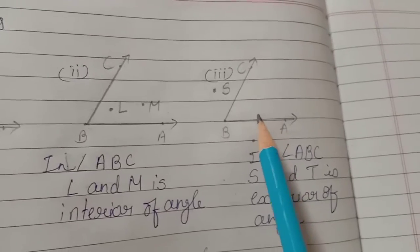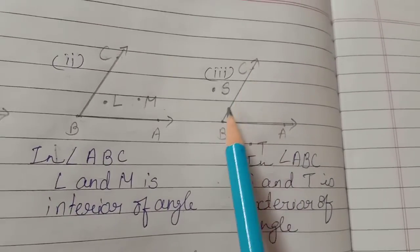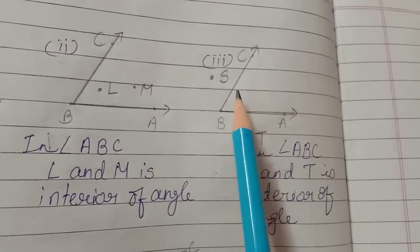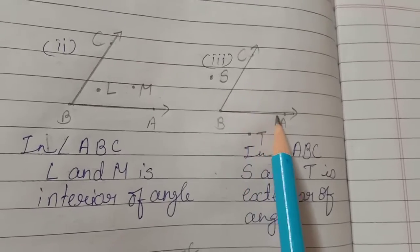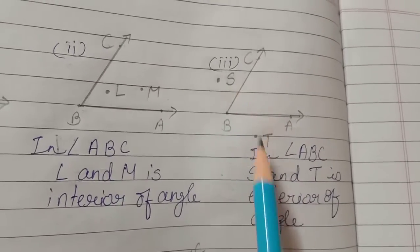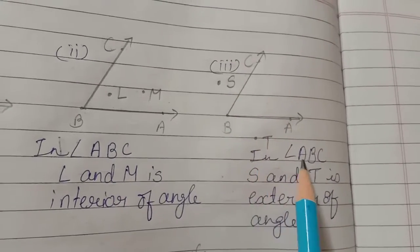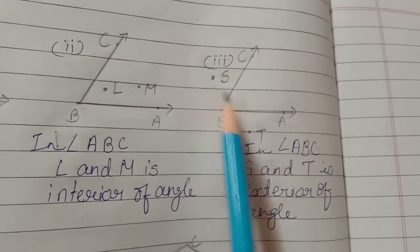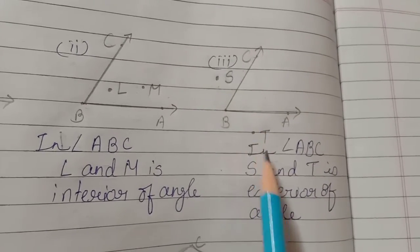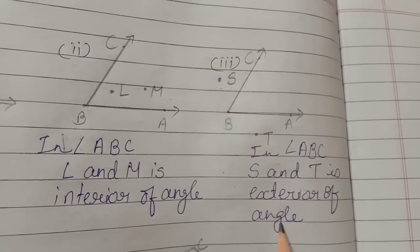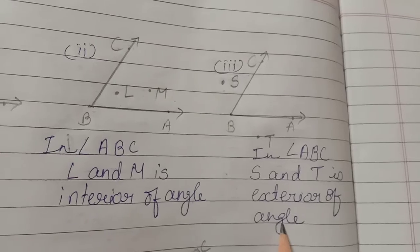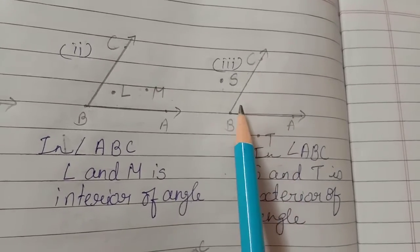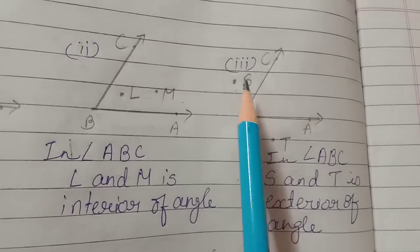The third example is about the exterior of an angle. In angle ABC, S and T are in the exterior of the angle. Why is it exterior? Because they are given on the outside of the angle. Can you see outside of this angle?